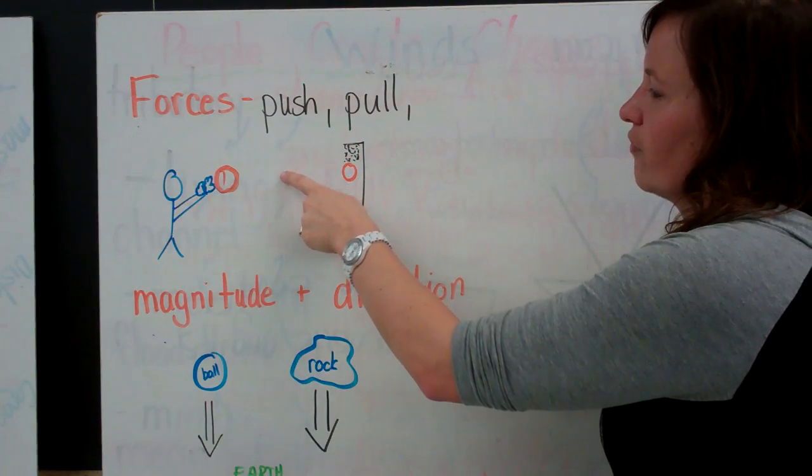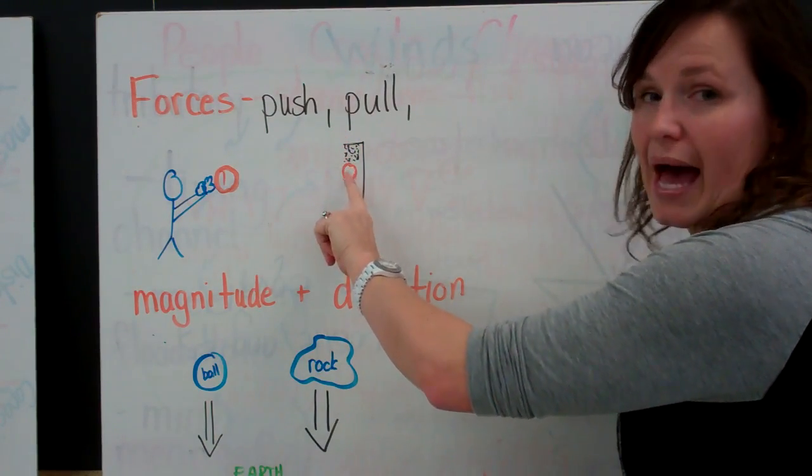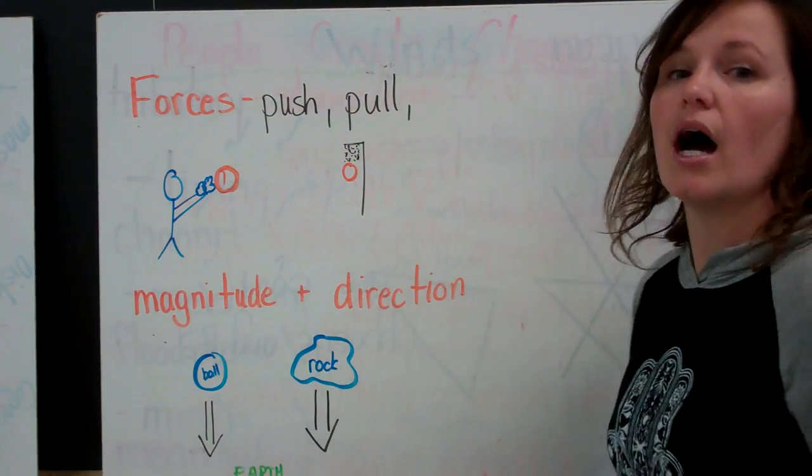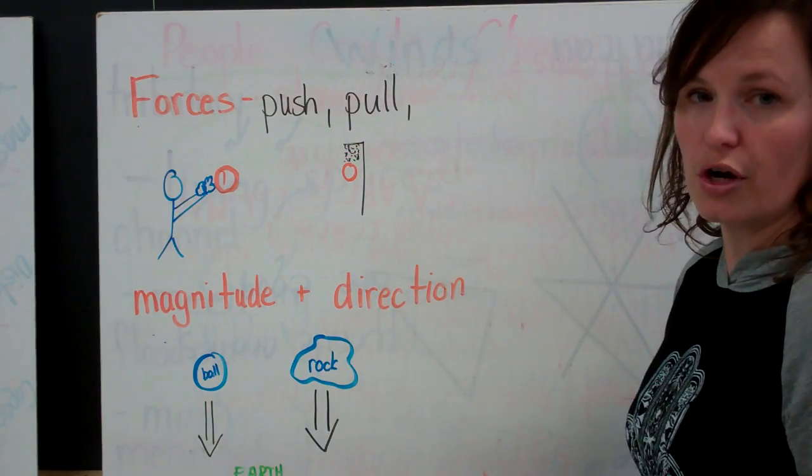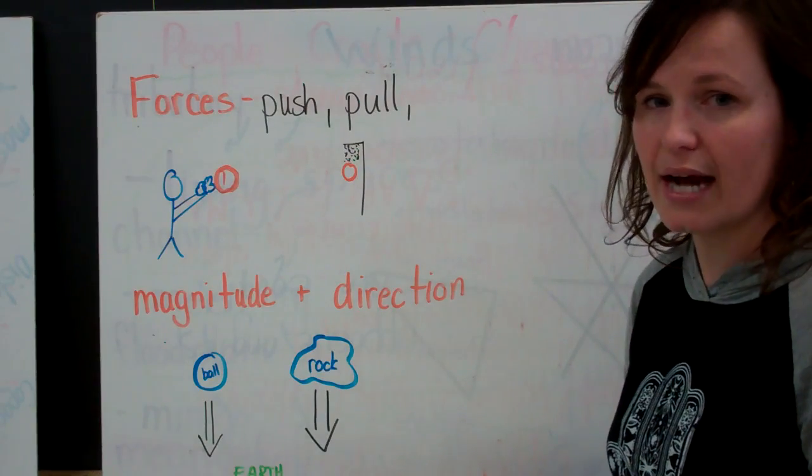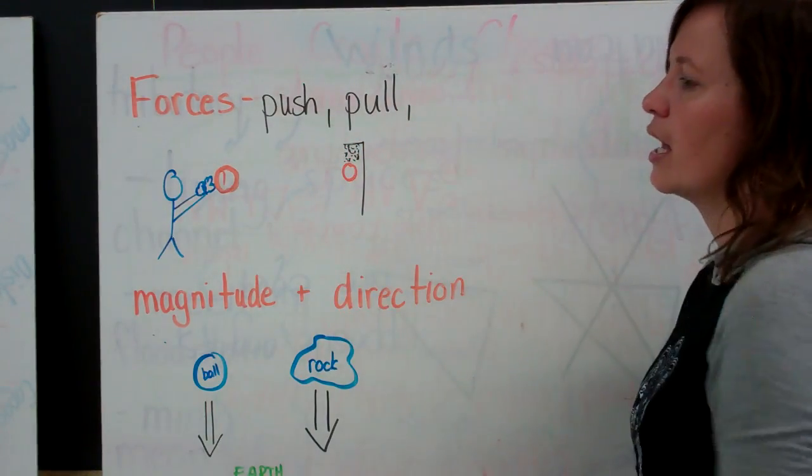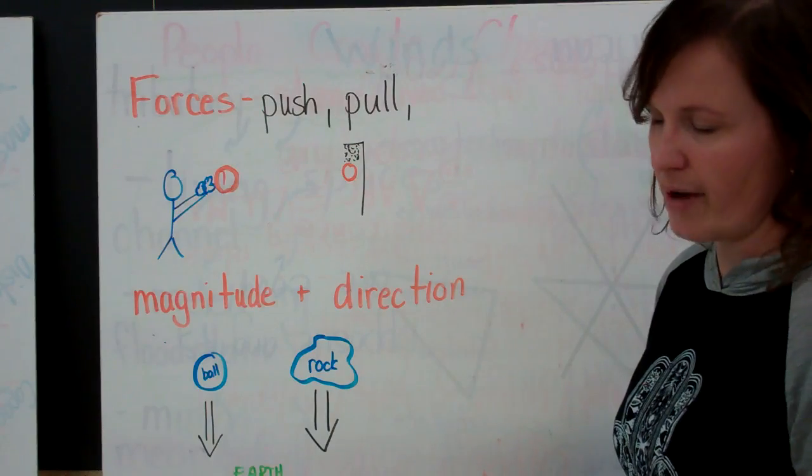But once the basket flies through the air and goes through the basket, gravity, a non-contact force, simply pulls that basketball to the earth. So there are contact forces, which are pushes and pulls. And the only non-contact force is gravity.